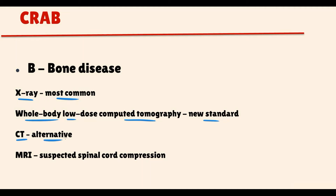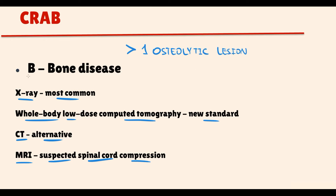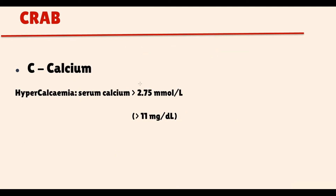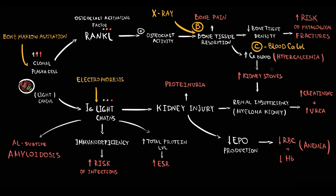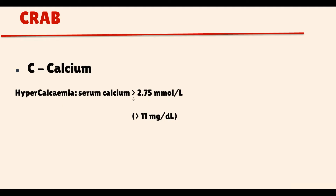We can also use CT, or in the case of suspected spinal cord compression, MRI is the more preferable option. The presence of one or more osteolytic lesions fulfills the B criteria. C stands for calcium: with destruction of bone tissue, calcium enters the blood, and the presence of more than 2.75 mmol/L of calcium in the blood fulfills the C criteria.